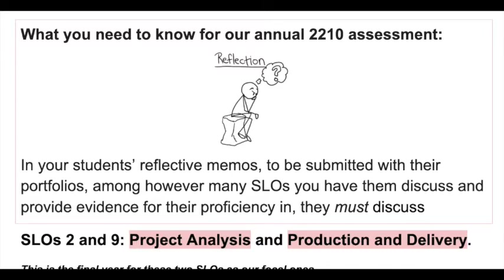Our annual assessment for the last several years has had our assessment team look at how students are performing on SLOs two and nine — project analysis and production and delivery. My intention was to change this for the next cycle, but with everything going on with coronavirus and core writing, we're not going to do that this year. We're just going to stick with SLOs two and nine. You need to be sure that when your students write their final reflection in their portfolio, they are emphasizing their work and providing examples of their proficiency in these two SLOs.